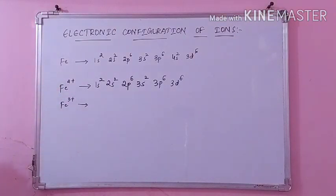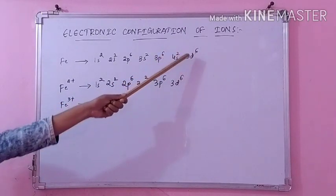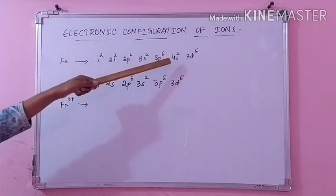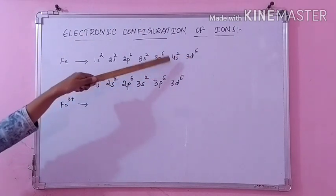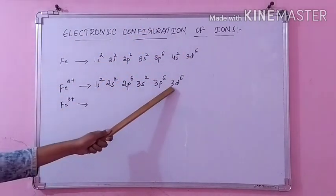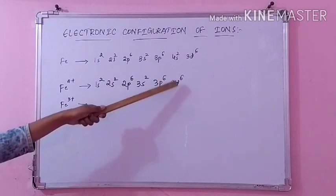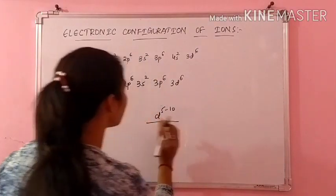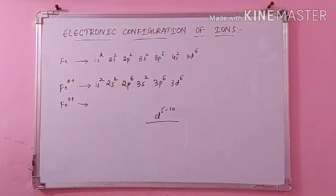Why do we remove the 4S2 electrons only and not 3D6? Because 4S is having higher energy than that of 3D — you have to remember. When you see the energy level diagram, 4S energy is at a higher level than that of 3D. Since it is having higher energy, we are removing the electrons from 4S. Also, 3D is more stable when the electrons are from D5 to D10. It wants to fill either half-filled or completely filled electrons. So we remove from 4S as it is having the higher energy level.